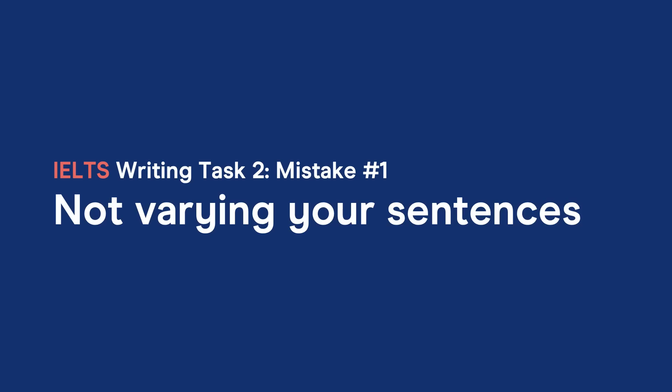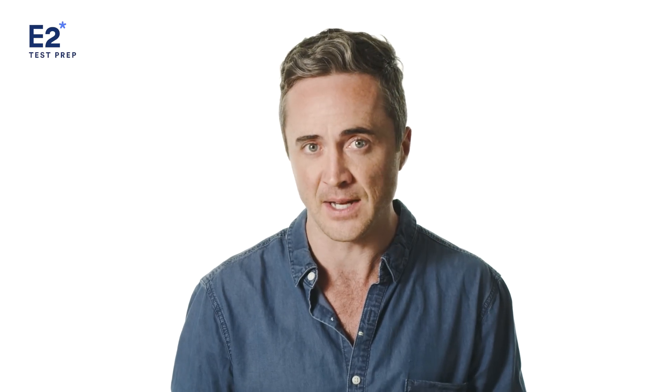Mistake number one: not varying your sentence types. In IELTS writing task two, you're scored on your grammatical range as well as your grammatical accuracy. This means that you have to use a variety of sentence types or you will be penalized heavily for grammar. Even if every single sentence is perfectly accurate, if the sentences themselves are not varied, you'll be penalized. If you don't use different sentence types in your writing — and this goes for both task one and task two — the highest score you can get for grammar is four, even if it's perfectly accurate. So this will bring down your entire writing score.